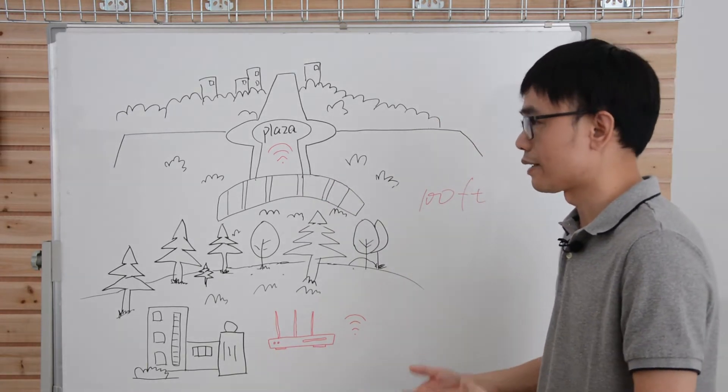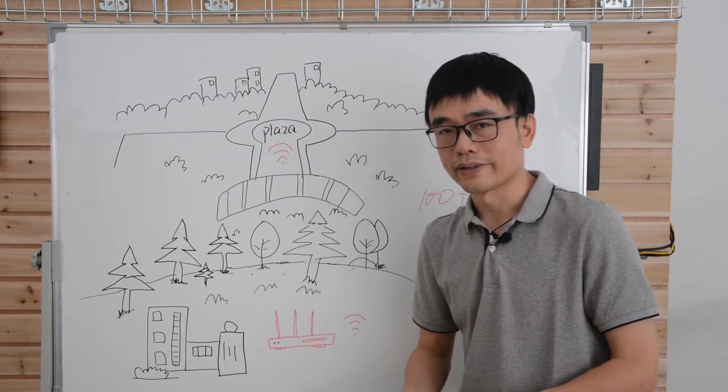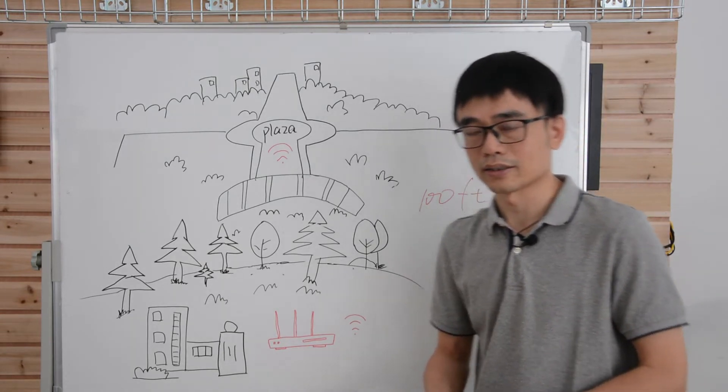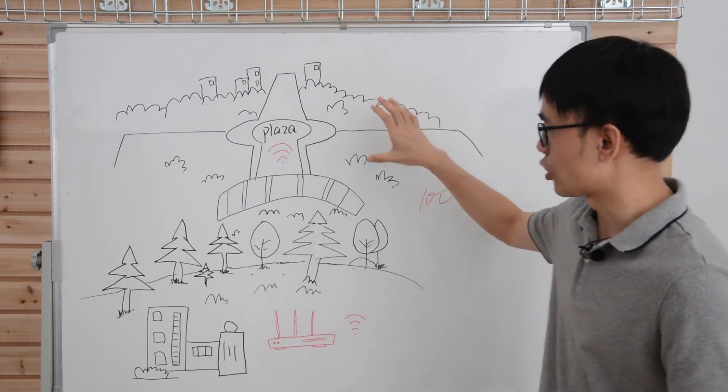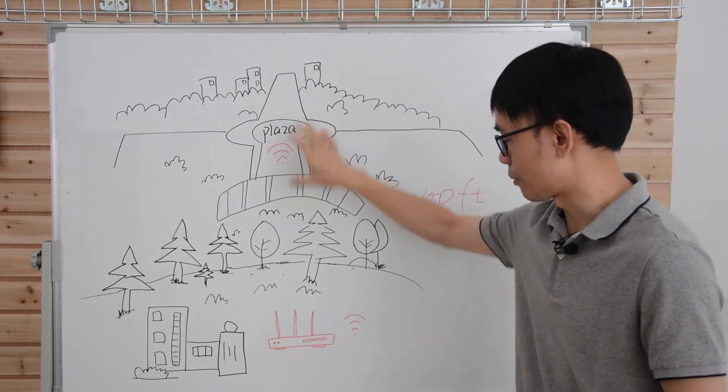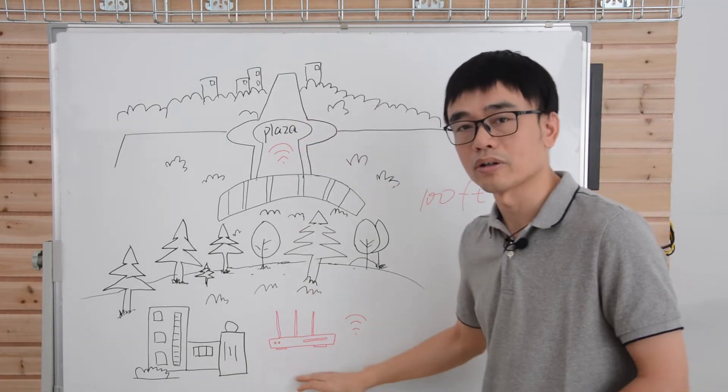So, the solution to consider is the outdoor access point. Netgear did have the Wi-Fi 6 outdoor access point, so he planned to install the outdoor access point here and it came up with the mesh with the original access point.